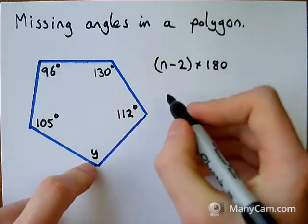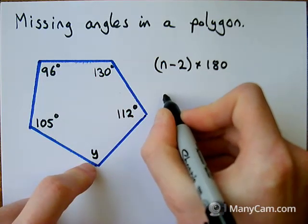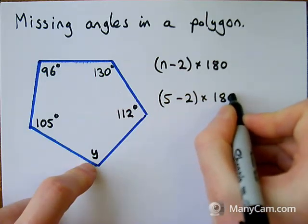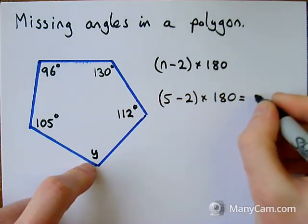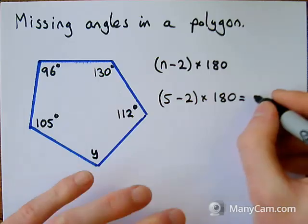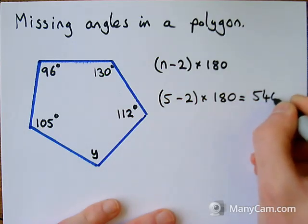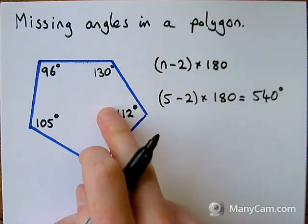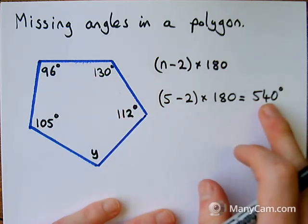So like I said, I've got a five-sided shape, so n is going to be 5. So I've got 5 take away 2 times by 180, which gives me 3 lots of 180, which is 540 degrees. So I know that the total amount of angles in this shape is going to add up to 540.